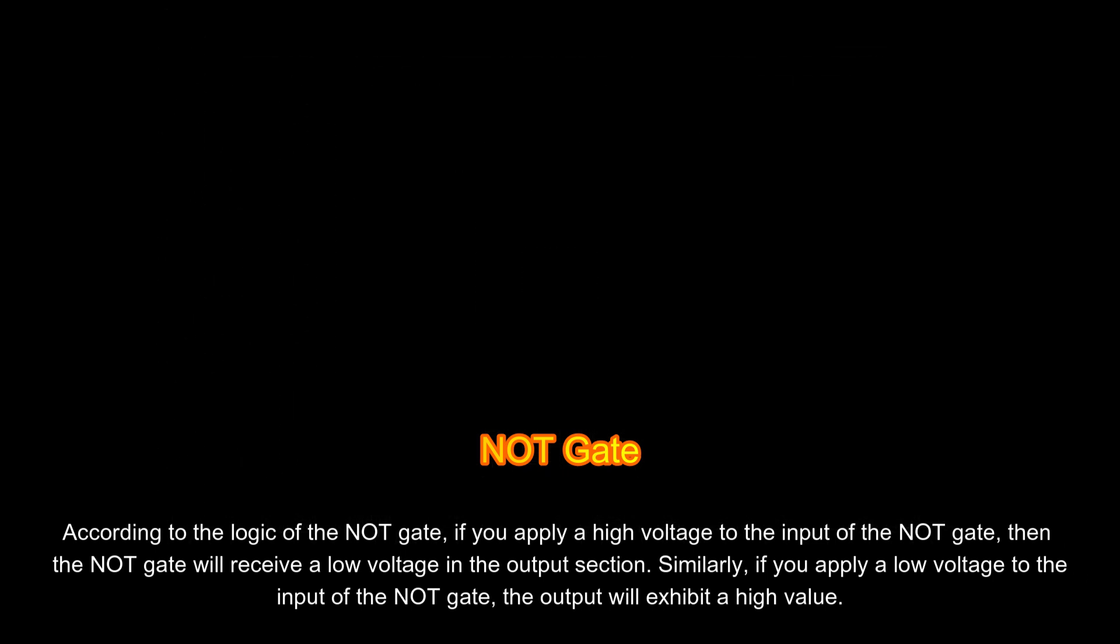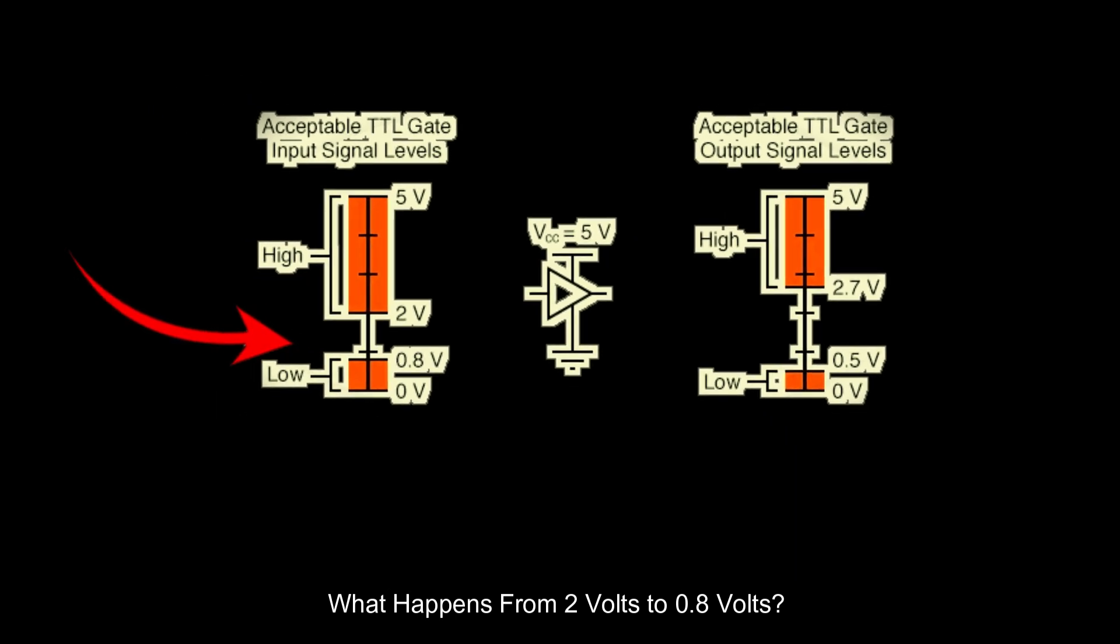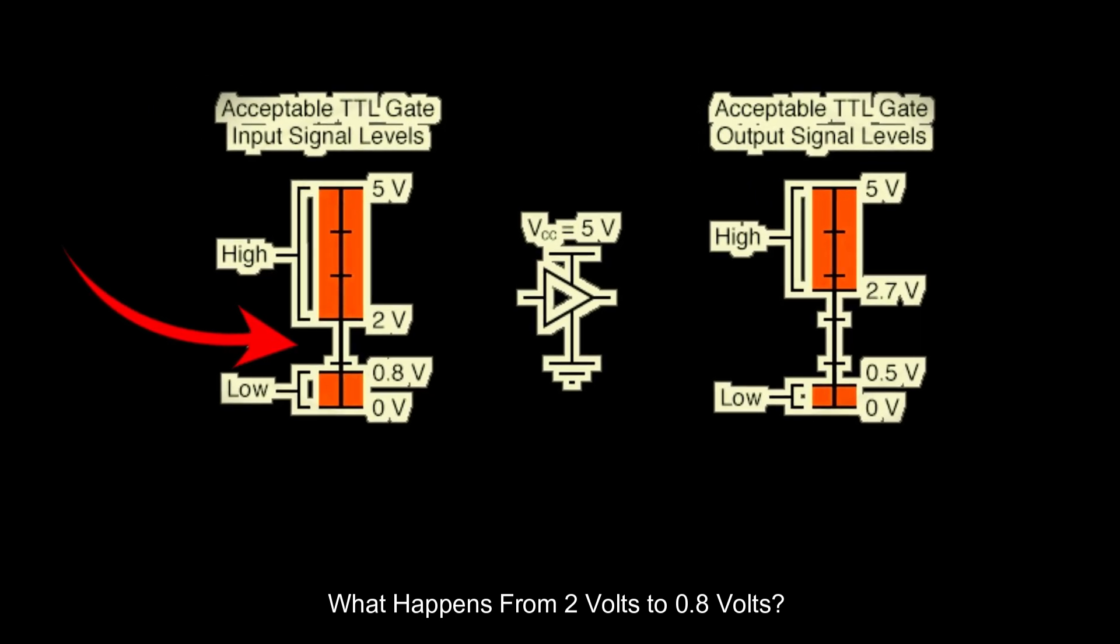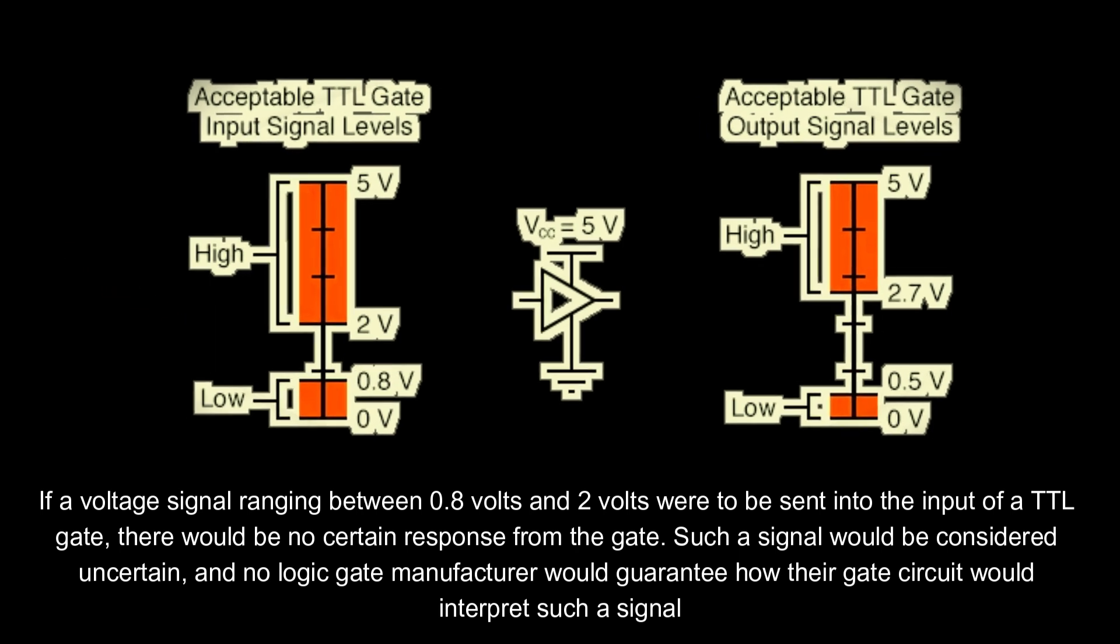What happens from 2 volts to 0.8 volts? If a voltage signal ranging between 0.8 volts and 2 volts were to be sent into the input of a TTL gate, there would be no certain response from the gate. Such a signal would be considered uncertain, and no logic gate manufacturer would guarantee how their gate circuit would interpret such a signal.